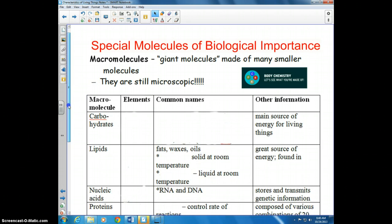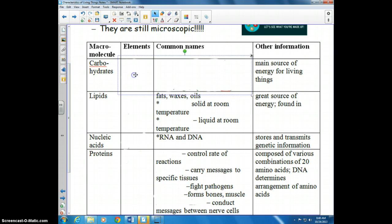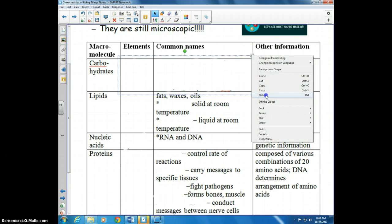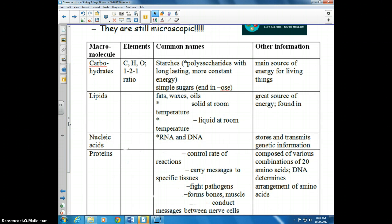The first type of macromolecule we're going to talk about is a carbohydrate. Carbohydrates are made up of carbon, hydrogen, and oxygen, always in a 1 to 2 to 1 ratio. They include things like starches and simple sugars. The most common carbohydrate we talk about in this class is glucose, which is C6H12O6. These are in this 1 to 2 to 1 ratio, because if you reduce 6, 12, and 6, you would get 1 to 2 to 1.